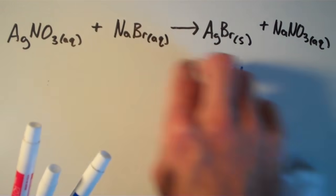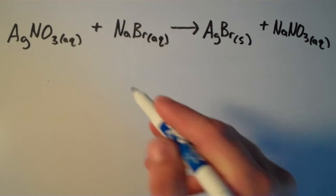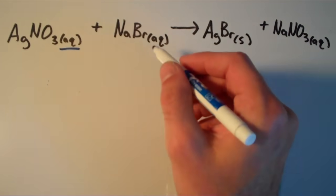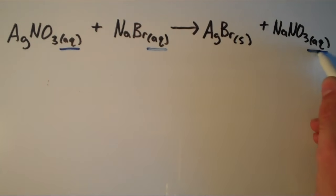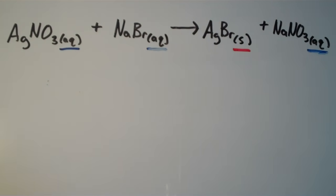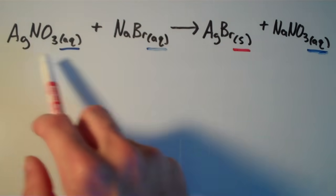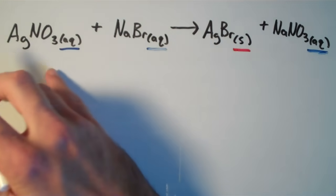In the molecular equation, if we identify which ones are aqueous and which ones are not: silver nitrate is aqueous, sodium bromide is aqueous, and sodium nitrate is aqueous too. The only one that's not aqueous is silver bromide — that's a solid. So in solution, silver nitrate, sodium bromide, and sodium nitrate exist as free ions each surrounded by water molecules. We can rewrite this equation in a new form.